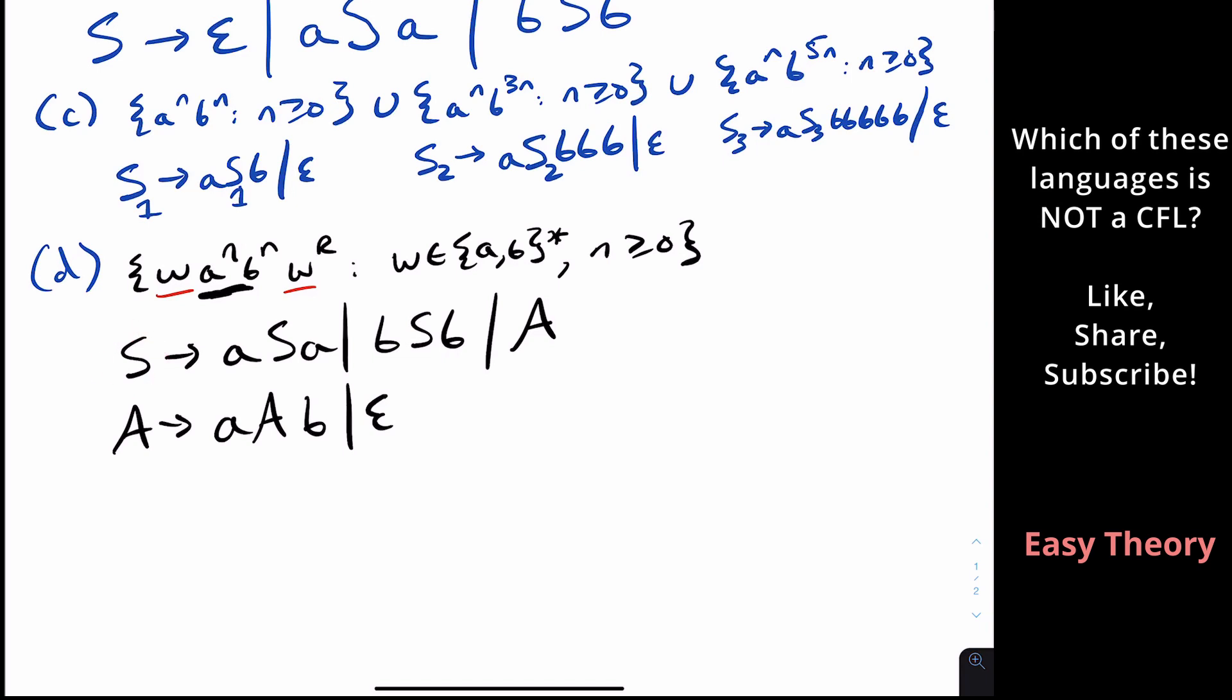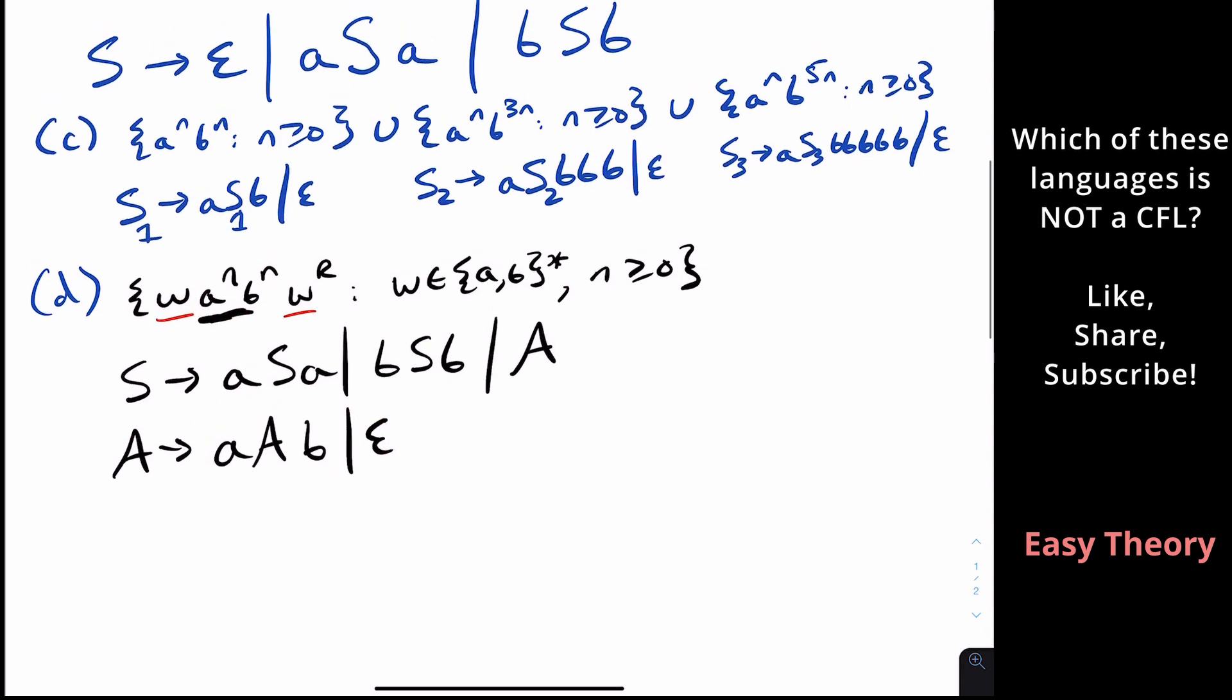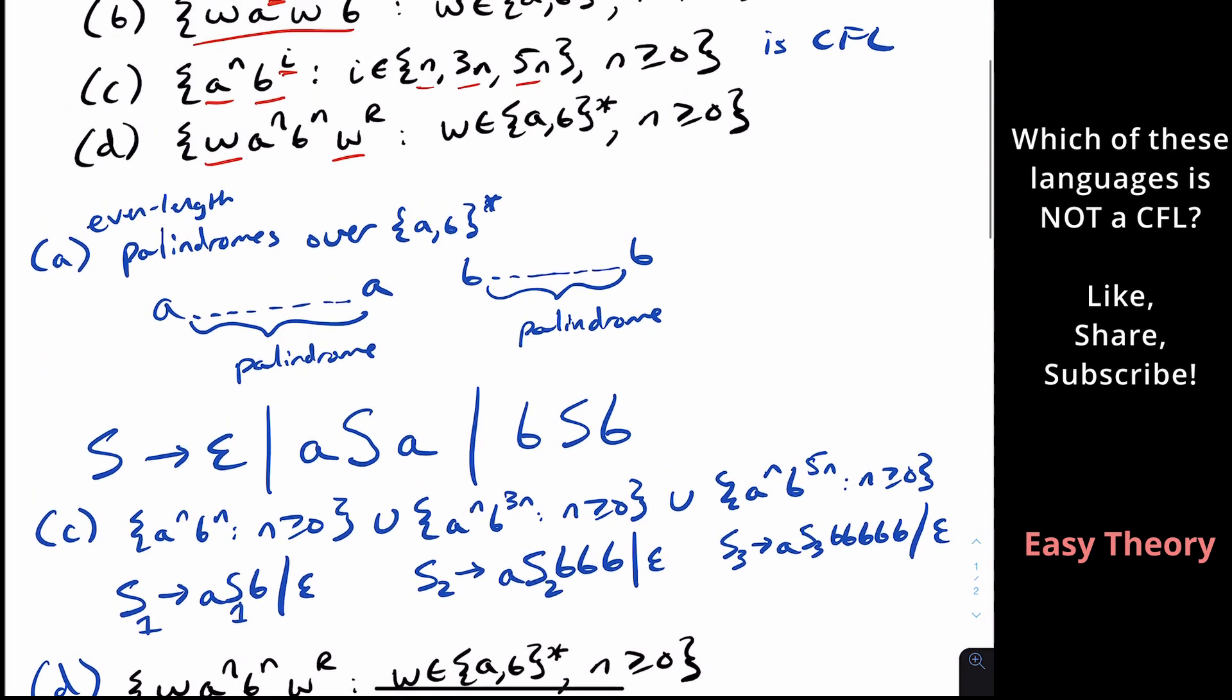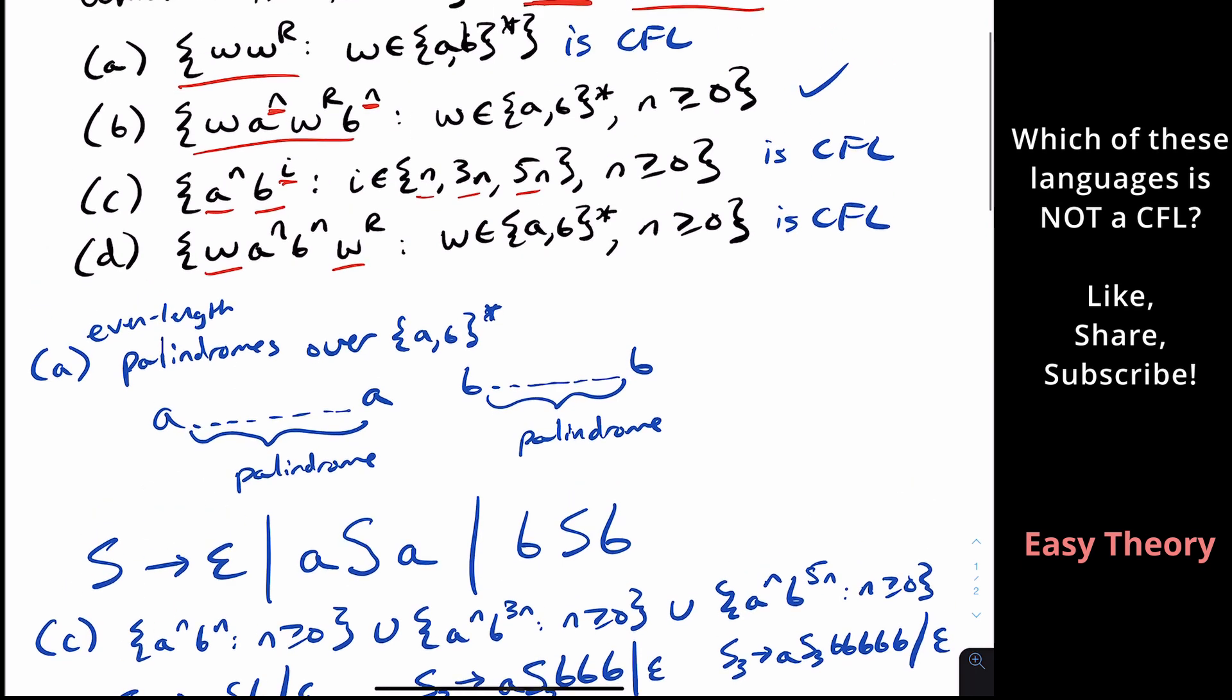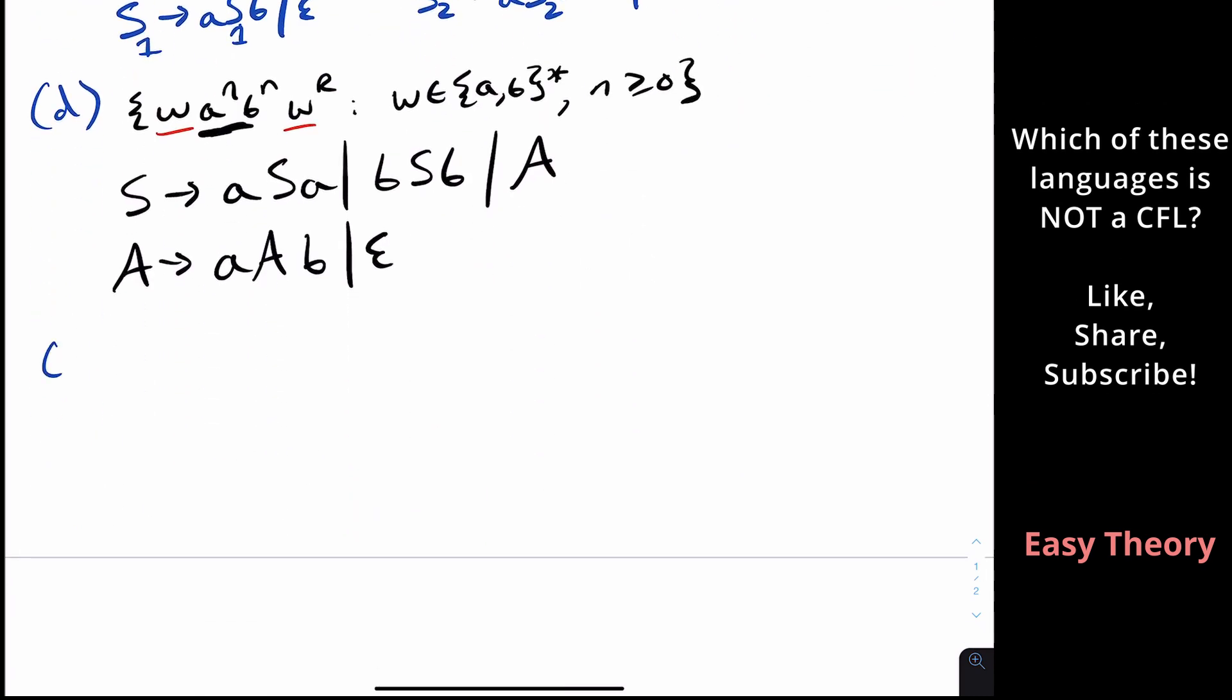And this works because in order to get a string of terminals, we have to get from S down to the empty string epsilon right here. Well, the only way to do that is eventually S has to hit A at some point, which means it's going to be generating some string of the form W, W reverse on the front and the end. And then at some point, it comes to the variable A, which must make something of the form A to the N, B to the N, because that's what the grammar makes. So we can confidently say now that D is also a context-free language. So then now becomes the interesting part. Why is part B not context-free, but part D is context-free?